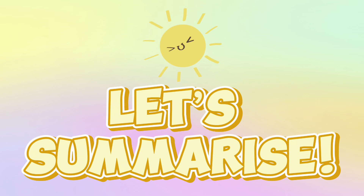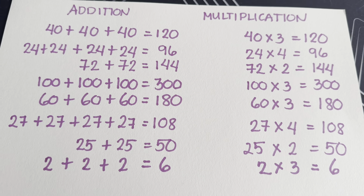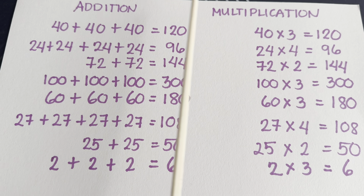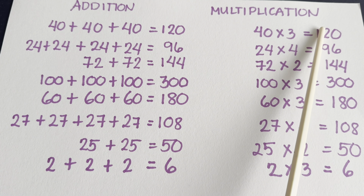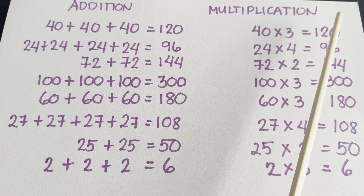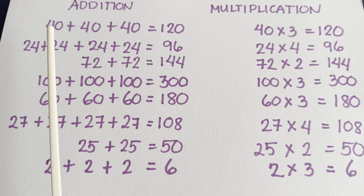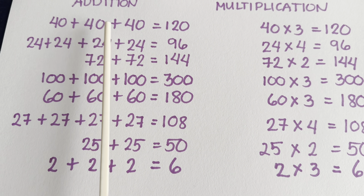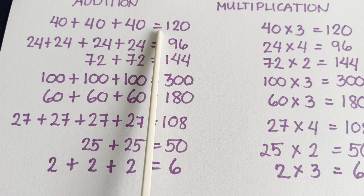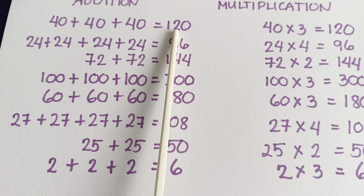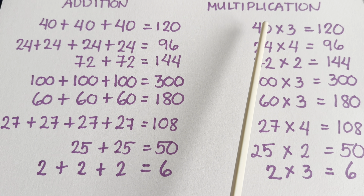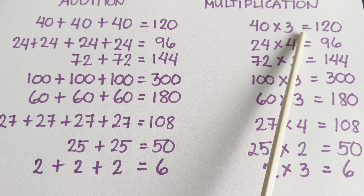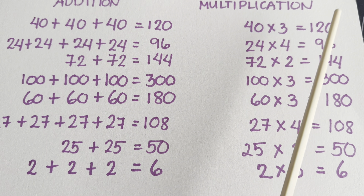Now, join me and let's summarize. Let's try to learn Addition versus Multiplication. Let's start with Example number 1: 40 plus 40 plus 40 is equals to 120. In Multiplication, 40 times 3 is equals to 120.